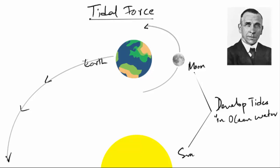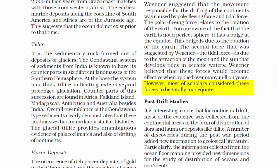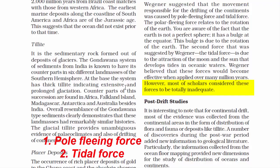Now there is a twist in this theory. Most scholars considered these forces to be totally inadequate, meaning they did not find enough strength in the two reasons suggested by Wegener, which ultimately led to the rejection of his theory. Please remember: it is due to the invalid reasons — pole fleeing force and tidal force — that led to the rejection of Wegener's Continental Drift Theory.